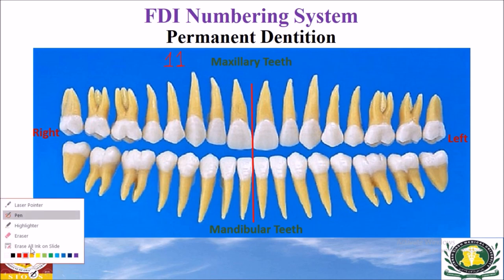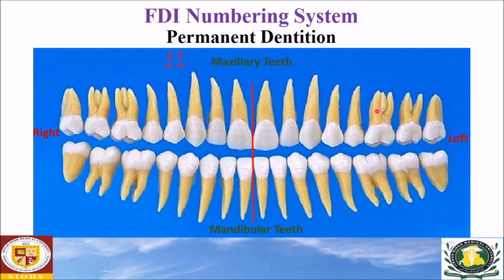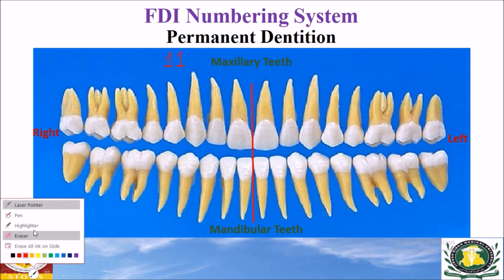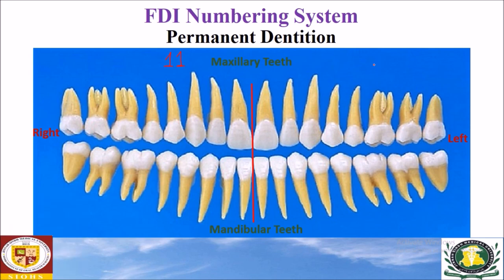Now the maxillary left second molar — this is the first molar, and this is the second molar. The quadrant number in the FDI notation system is number two. Counting from the midline: one, two, three, four, five, six, seven — so this tooth is referred to as two seven in the FDI notation system.